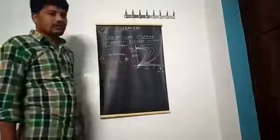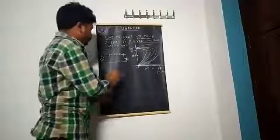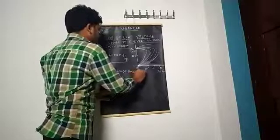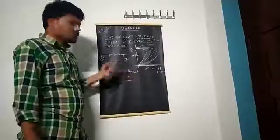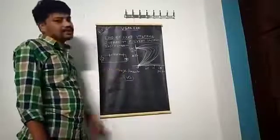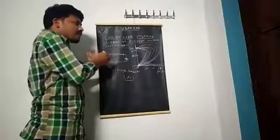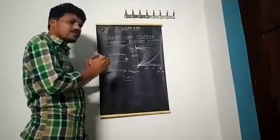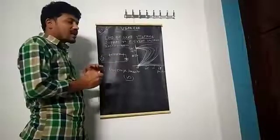Before discussing the voltage instability prevention method, let us first understand what voltage stability means. Voltage stability, abbreviated as VS, is the ability of a system to maintain acceptable voltages — that is, voltages within the minimum and maximum limits — under normal and abnormal conditions.